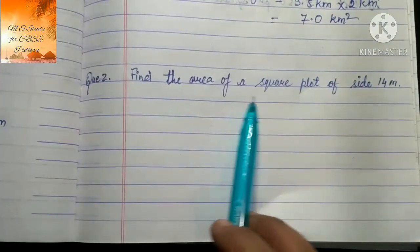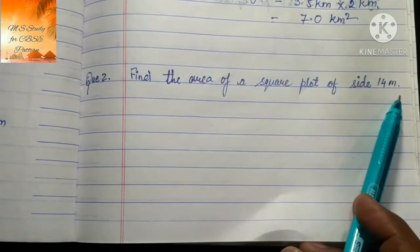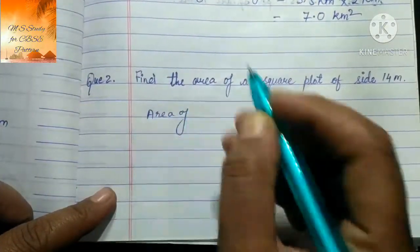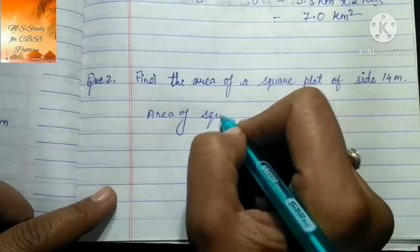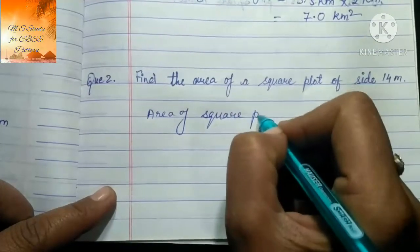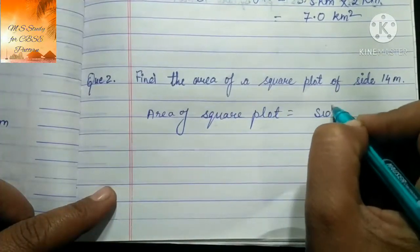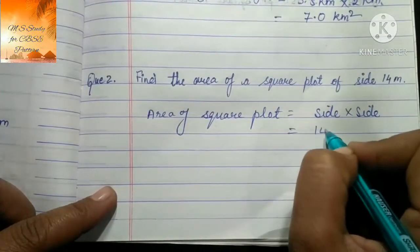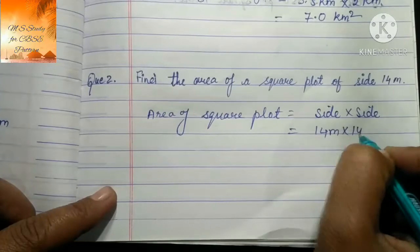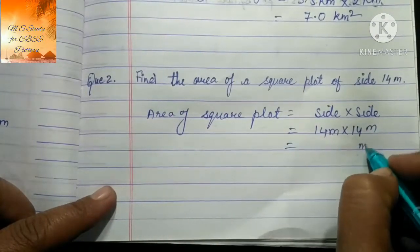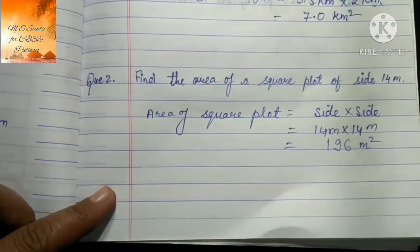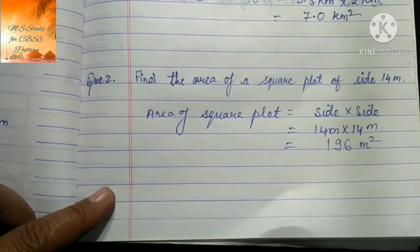Question number 2: Find the area of a square plot of side 14 meter। Area of square = side × side = 14 m × 14 m = 196 m²। Area of square plot = 196 m²।